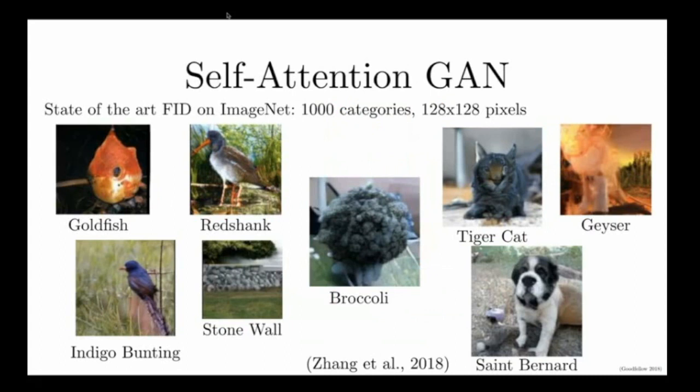The state-of-the-art for generating images with generative adversarial networks today is the self-attention GAN. This is the best model that we have for the ImageNet dataset today, and the basic idea behind the self-attention GAN is that we would like to get highly realistic examples of all of the different image categories in the ImageNet dataset.